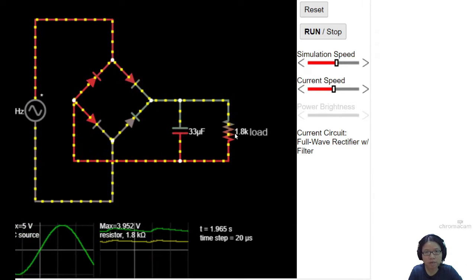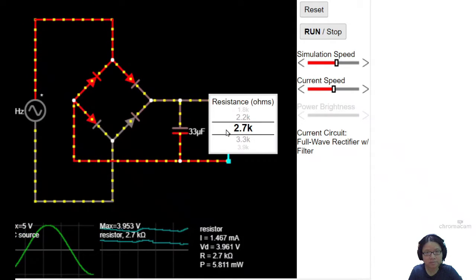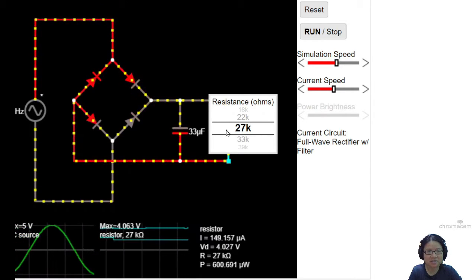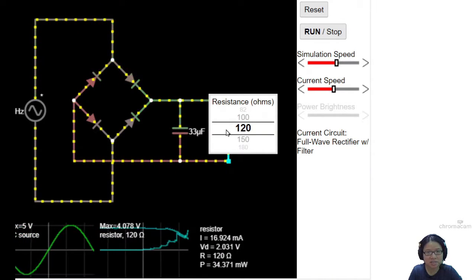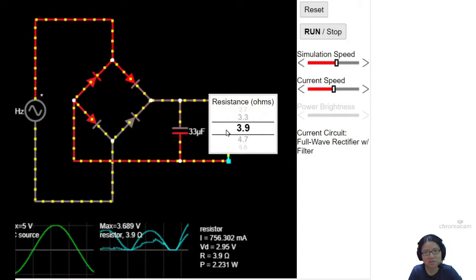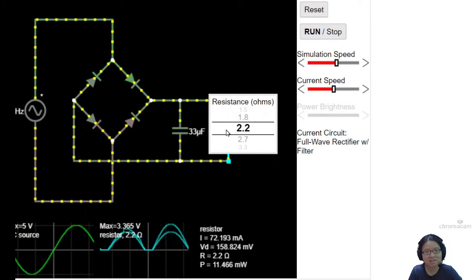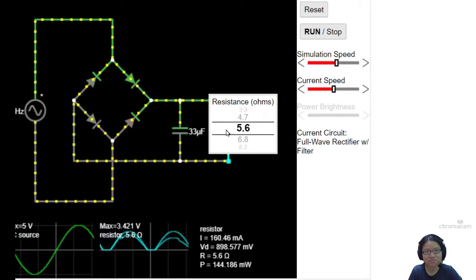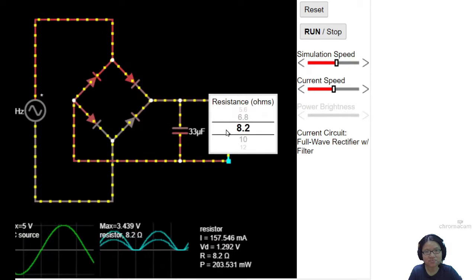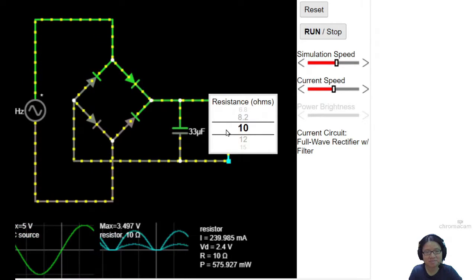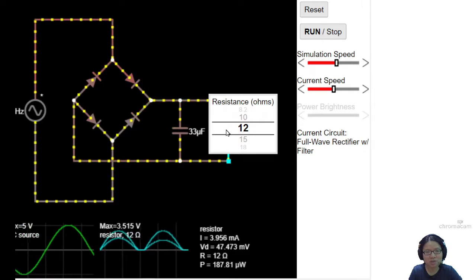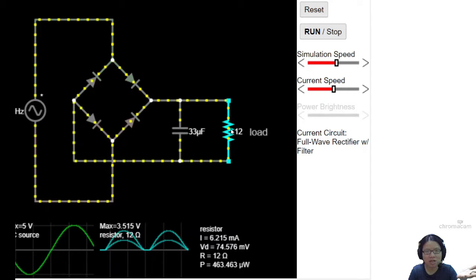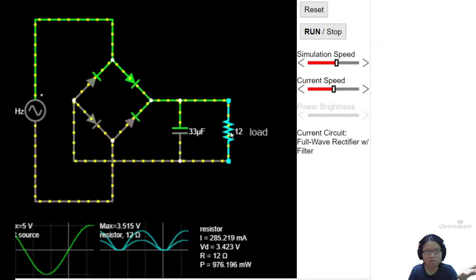So if let's say you increase this load to higher and higher, the shape will be flatter and flatter. But if you decrease this—okay, just now—let us decrease to something really small, like I don't know, 10. So you can see the smoothing effect is not helping already. Before you reach the next peak, the capacitor runs out of charge now because the current can flow faster through this load.